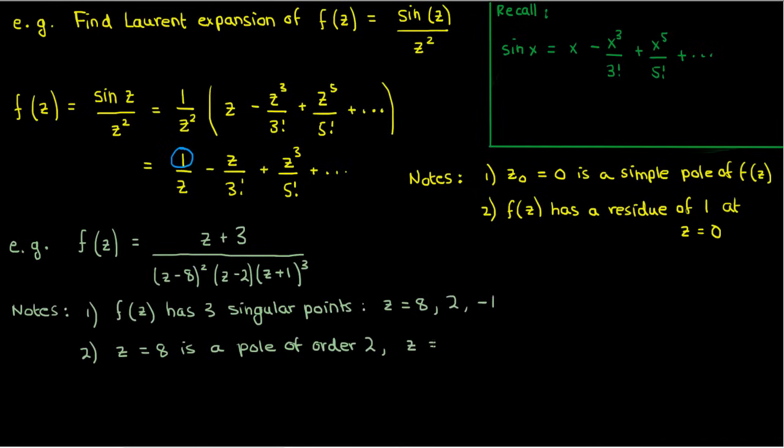Another thing to note is that z equals 8 is a pole of order 2, z equals 2 is a pole of order 1, and z equals negative 1 is a pole of order 3.